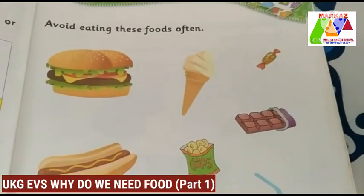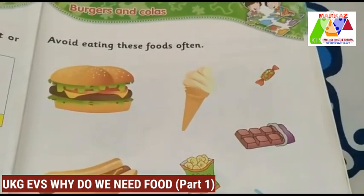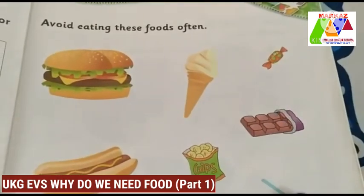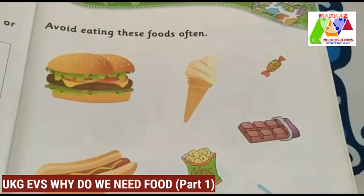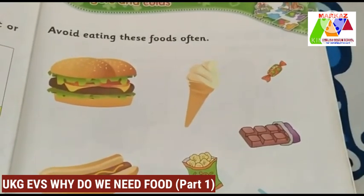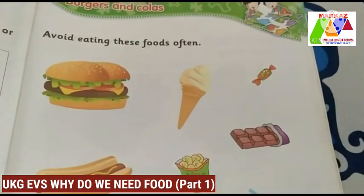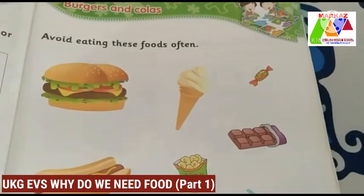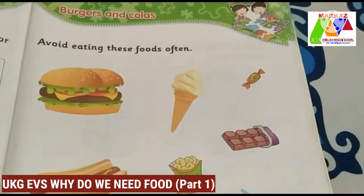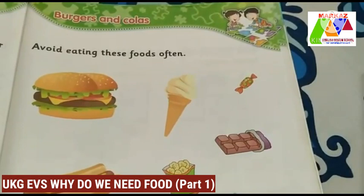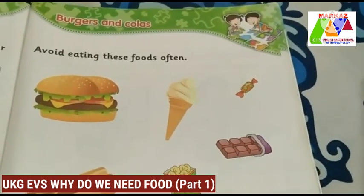All of you take page number 161 — burgers and colas. These are some junk foods. What is junk food? Junk food items are foods that are not healthy for us. They cause many diseases in our body and make us fat and weak. Junk food also causes tooth decay.